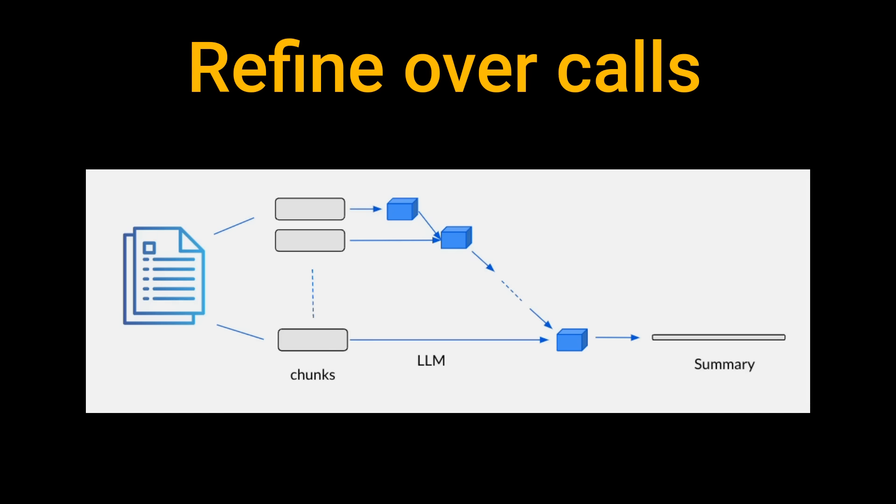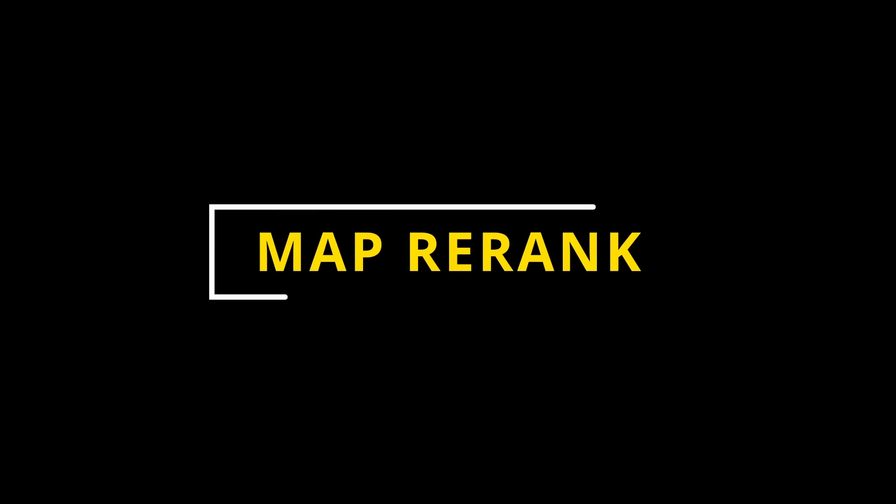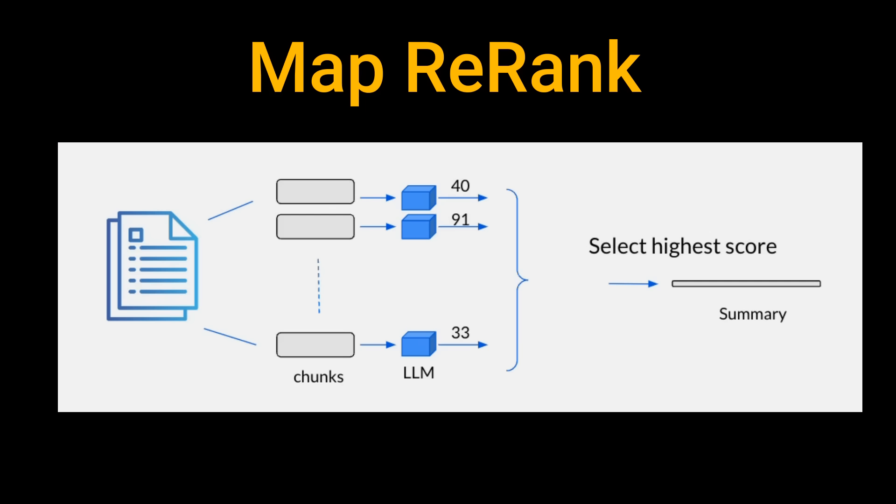A variation on this that people used a lot was refining over calls — each time passing in our summary and adding to it, keeping what we had before, deciding what is more important. There are also techniques where people do re-ranking of the chunks to work out which chunks have the best information in there.